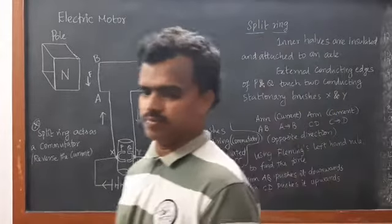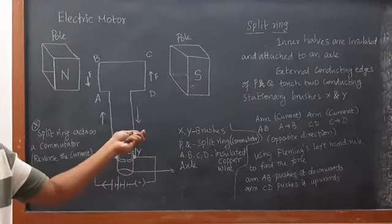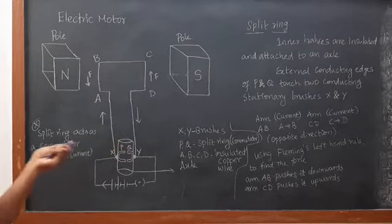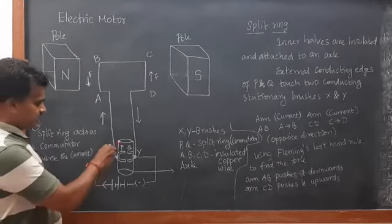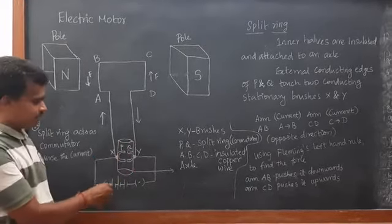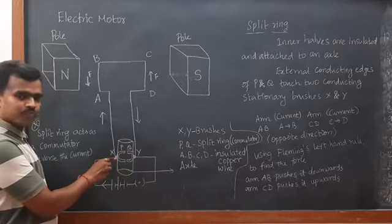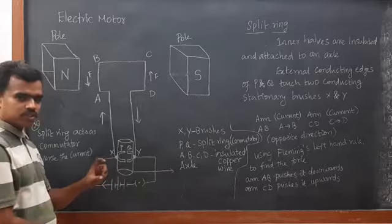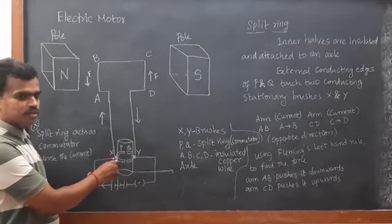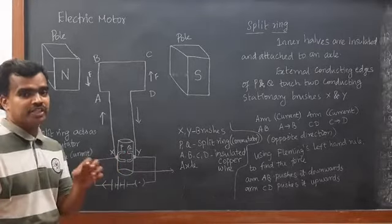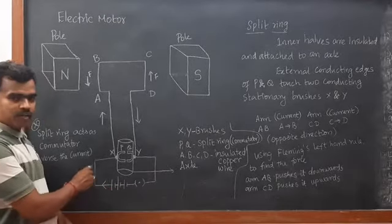What are the setups we have? In the construction, we have two poles — one is the North Pole and another one is the South Pole. So we have magnets. We have one axle — this is called the axle. And in that axle, we have brushes. These brushes are stationary, and they clamp this split ring loosely, not tightly. And we have one circuit — we have a battery.